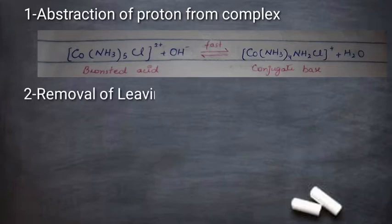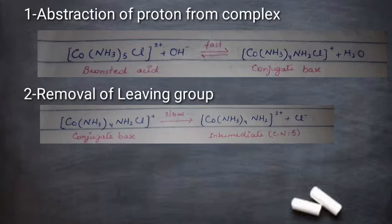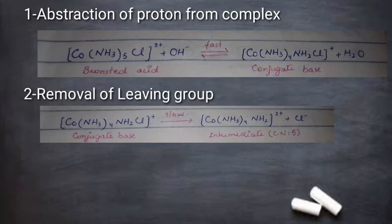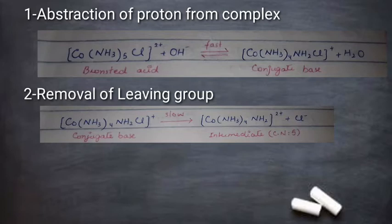Step 2 is removal of the leaving group. The conjugate base facilitates the cobalt center — the leaving group here is Cl⁻ and NH₂. The lone pair on NH₂ favors the formation of a pi-bond with cobalt, which facilitates the elimination of the leaving group to form an intermediate with coordination number 5. The oxidation state goes from +1 back to +2, and this reaction is very slow, making it the rate-determining step.